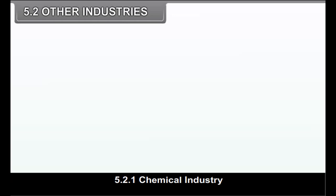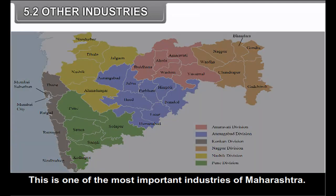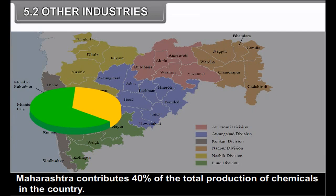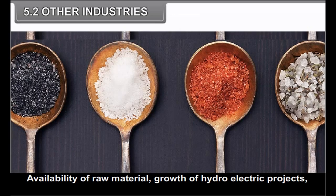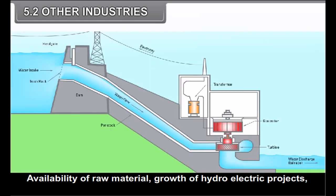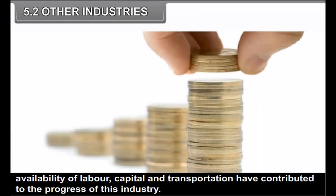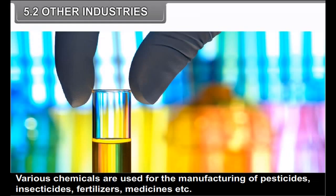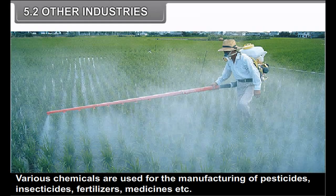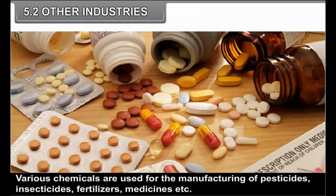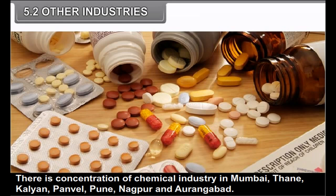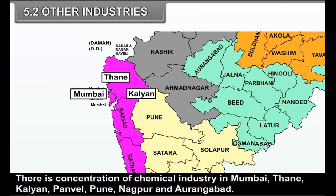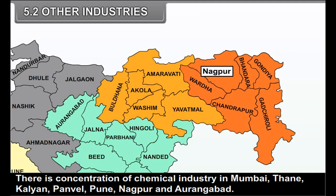5.2 Other Industries. 5.2.1 Chemical Industry: This is one of the most important industries of Maharashtra. Maharashtra contributes 40 percent of the total production of chemicals in the country. Availability of raw material, growth of hydroelectric projects, availability of labour, capital and transportation have contributed to the progress of this industry. Various chemicals are used for manufacturing pesticides, insecticides, fertilizers and medicines. Chemical industry is concentrated in Mumbai, Thane, Kalyan, Panvel, Pune, Nagpur and Aurangabad.